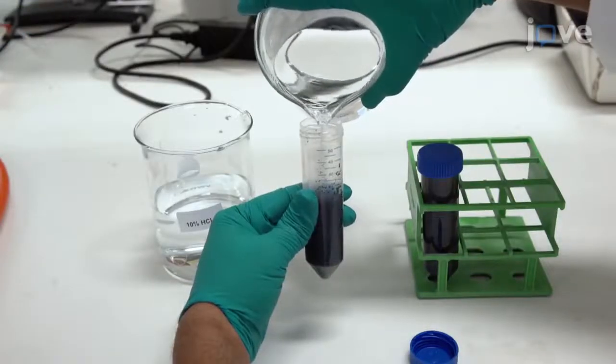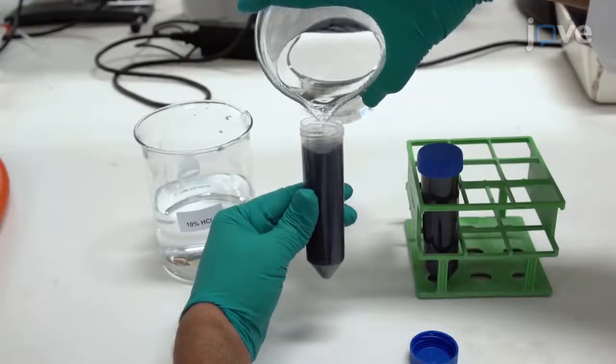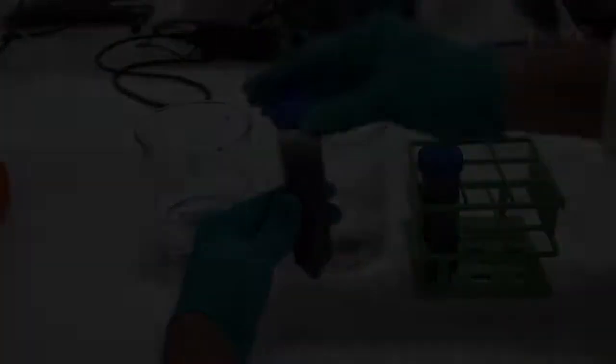After discarding the supernatant, wash the pellet 4 times with warm double distilled water and 2 times with 10% hydrochloric acid.